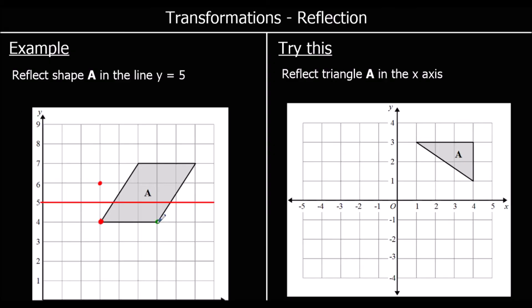This point was one away from the mirror line, so one away on the other side. For this point, we were two away, so we go two away on the other side. And finally the last corner — two away — two away on the other side. So if we join up our new points, we can see what the shape looks like. There is our new shape.